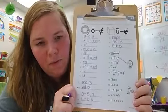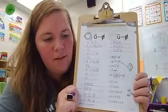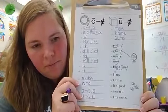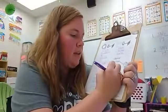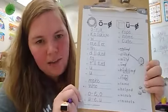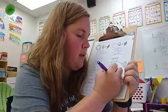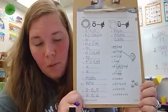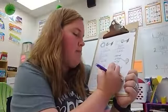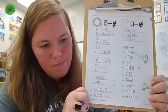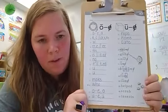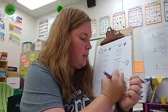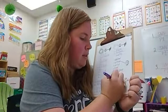For number 23, thins. The I is short. The S is a suffix, so I'm boxing it. And it also makes the Z sound. It is voiced, so I cross it out. Number 24 is tame, A consonant E. Number 25 is helped. The ED suffix makes the schwa.